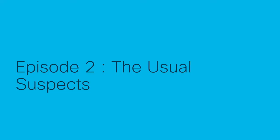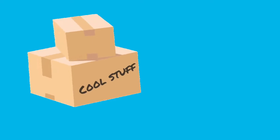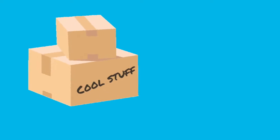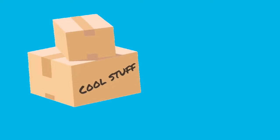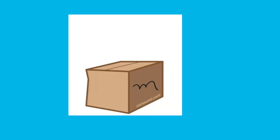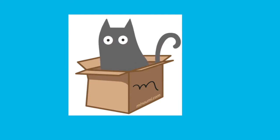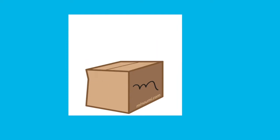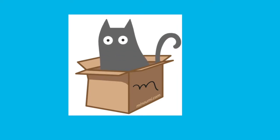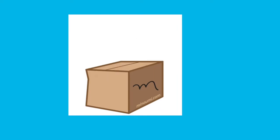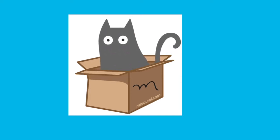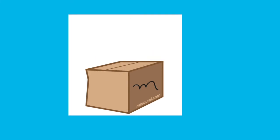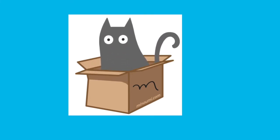Episode 2: the usual suspects. The cool stuff is always flashy, interesting, thought-provoking — very tempting for you to open. When you open it, boom — the cat's out of the box. Consider this box to be a Word document, a PDF, or an EXE. How did the cat come out? Because there was human action or human intervention. You open the box, the cat came out. The cat is the malicious code.